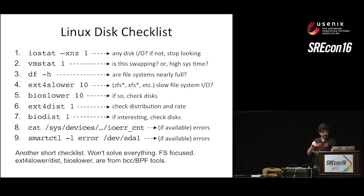The last checklist is the USE method — nice and simple. It's a methodology where for every resource you check utilization, saturation, and errors. Utilization is busy time, saturation is queued time, and errors are easy. You can do this for hardware — every component on a system, just those three metrics. It's great because it narrows things down from the lots of system metrics available, and poses the questions you really want answered rather than making do with what the system gives you. I've turned these into actual checklists posted online. We should turn these into dashboards — we've been doing some of that work at Netflix. For distributed systems these are applicable too: each component in your environment, just utilization, saturation, errors.